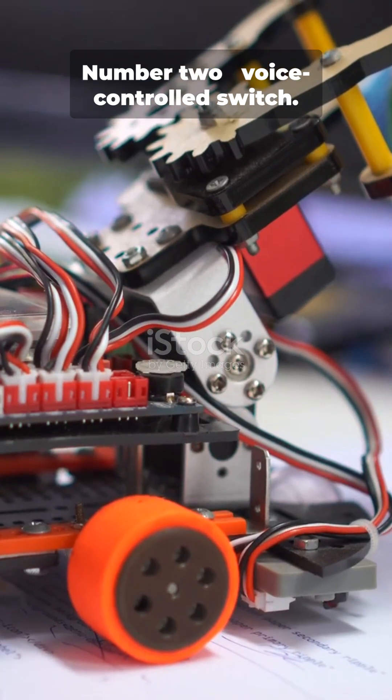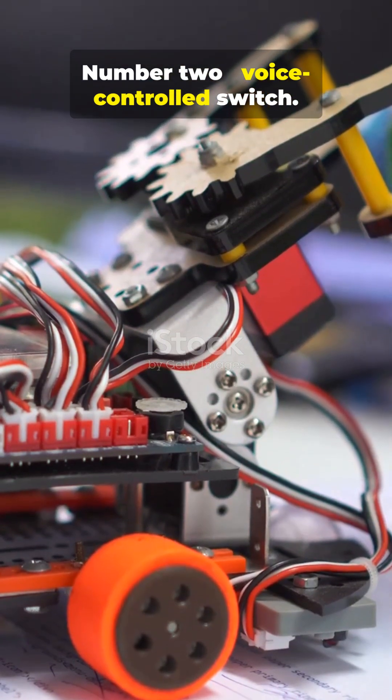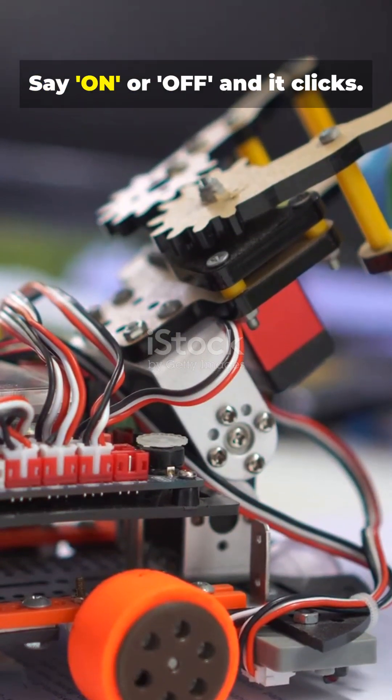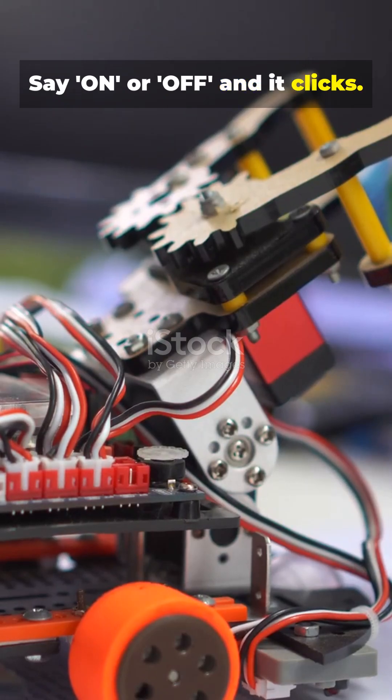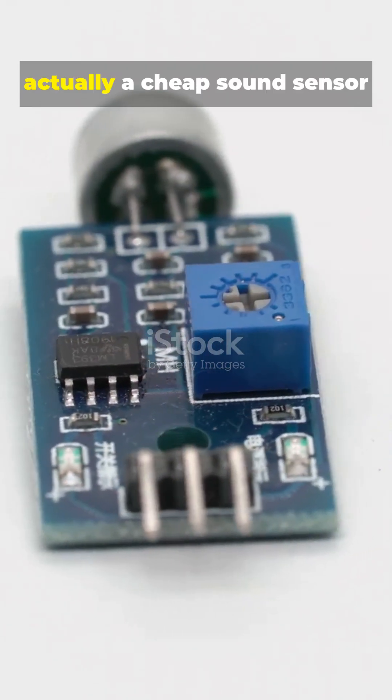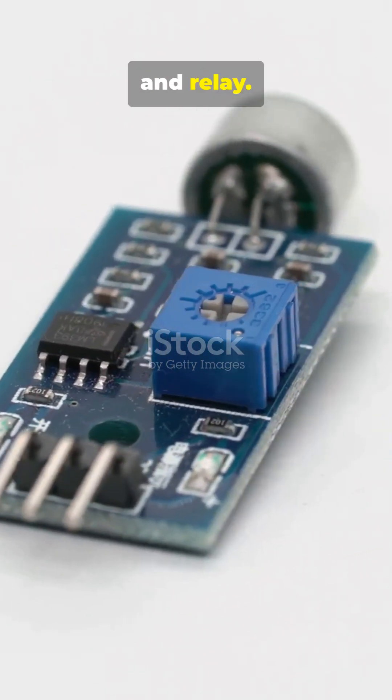Number 2. Voice gate. Voice controlled switch. Say on or off, and it clicks. Feels like smart automation. Actually a cheap sound sensor and relay.